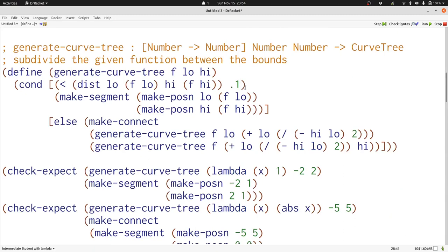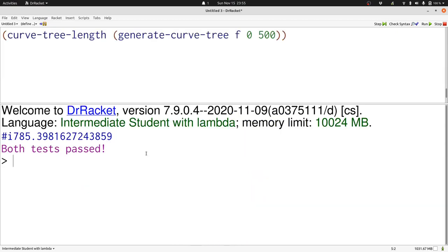Now we've changed this to 0.1. Let's run it and see what answer we get for that same curve tree length. Here we've got a different curve tree, but as we can see, the length hasn't changed that much. 10 was a reasonable number for our approximation.